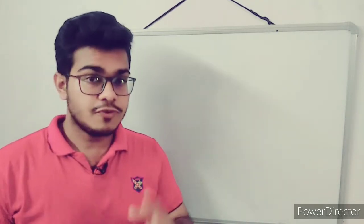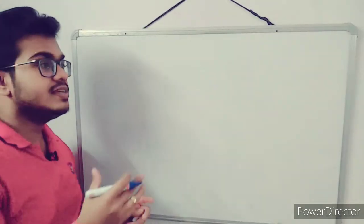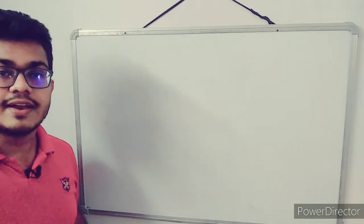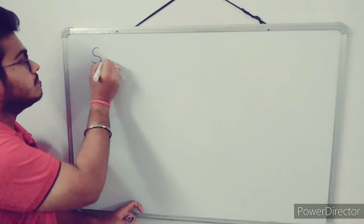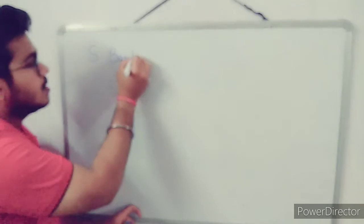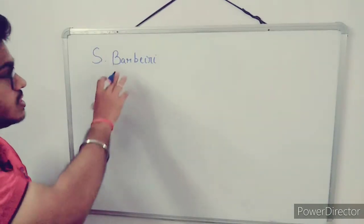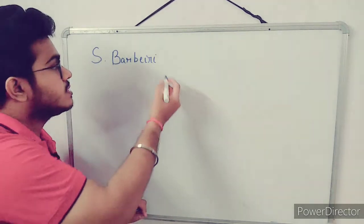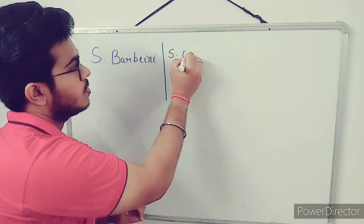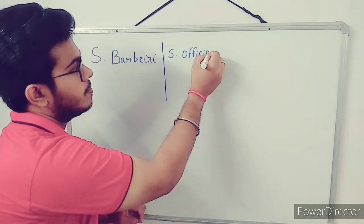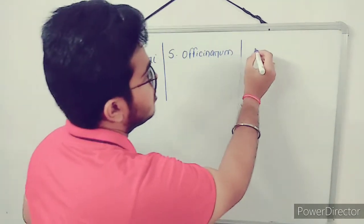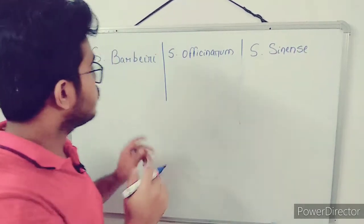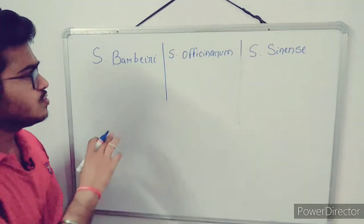The initials of sugarcane that we use is Saccharum — Saccharum means sugar content. The three main species are: Saccharum barbari, Saccharum officinarum, and Saccharum sinensis. Let us now learn a few characteristics about all three of these species that are mostly cultivated in different parts of the world.